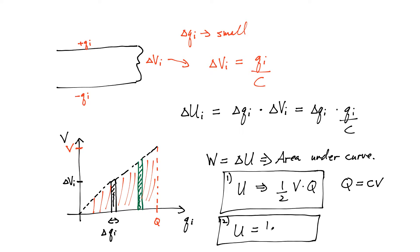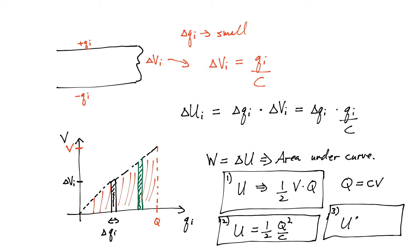If I eliminate the voltage and replace it by charge, I get the potential energy as one half Q squared over the capacitance. The third form is to eliminate the charge and write the total potential energy in terms of voltage and capacitance: one half CV squared. So there are three formulas to calculate the potential energy stored in a capacitor with total charge Q and potential difference V. That's method number one.